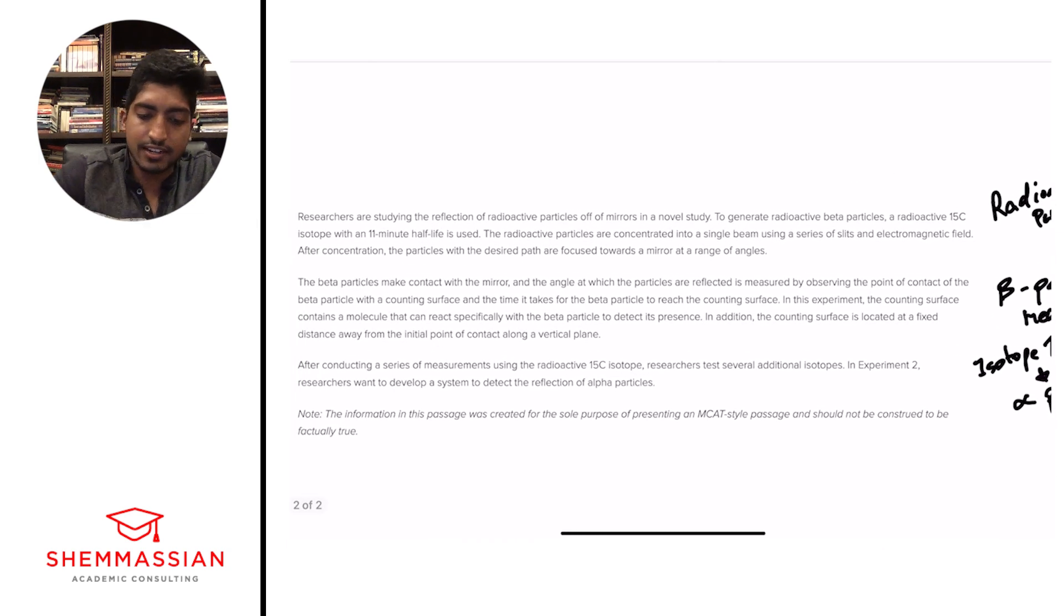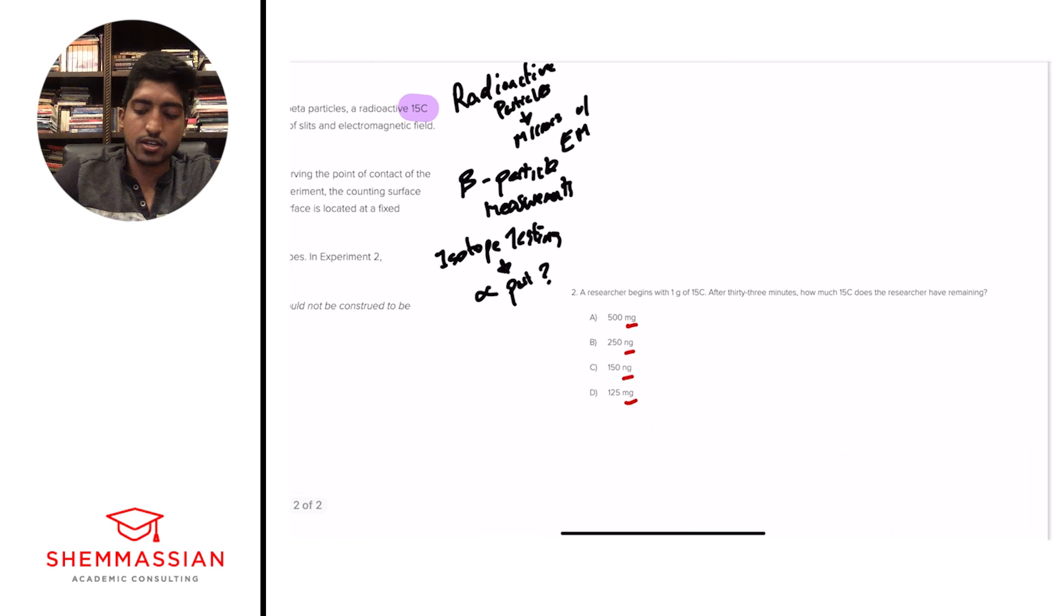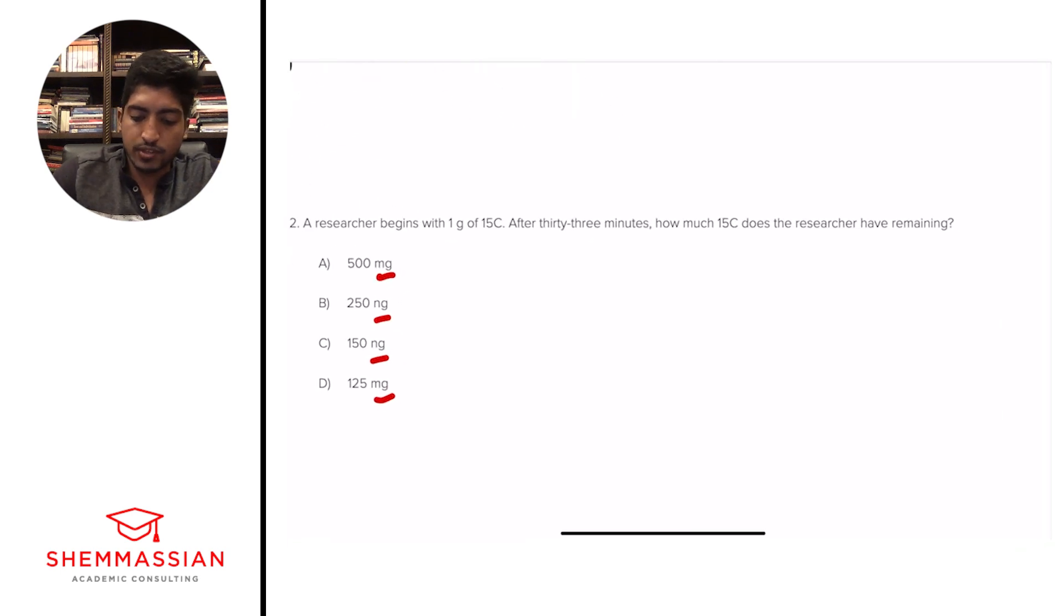And we're going to look back at where in our passage we talked about half-lives. And here it says 15C, an isotope with an 11-minute half-life, is used. Alright, great. And so if it's an 11-minute half-life, this is a very important topic, half-life, right?